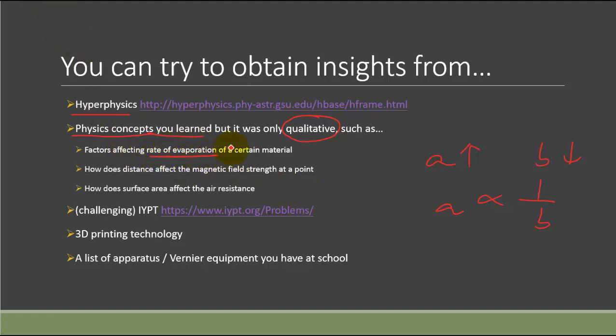Example could be like how the rate of evaporation affected by different factors that you learn in IGCSE. Or it could be, we all know that away from the magnets, the magnetic field strength is actually weaker, but then how does it decrease? Like what kind of mathematical model would be suitable to describe? Is it just linear or would it be inverse square or what?